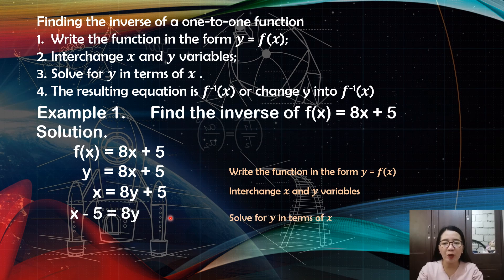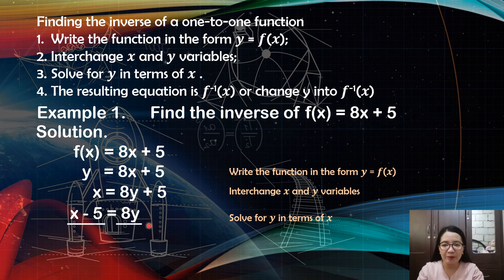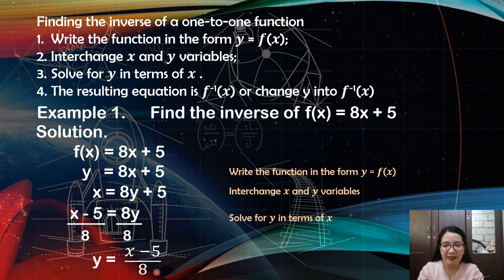Number three, solve for y in terms of x. I will transpose positive 5 to the other side of the equation, so it becomes negative 5. Then we have x minus 5 equals 8y. To get rid of 8 and solve for y, we divide both sides by positive 8. So 8y divided by 8 equals y, and x minus 5 divided by 8 gives us x minus 5 over 8.